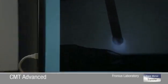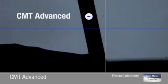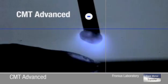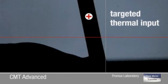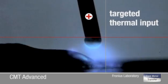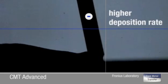In CMT, the wire motions are fully integrated within the process. In addition, CMT Advanced also reverses the polarity in the short-circuiting phase. The arc remains stable and the deposition rate is up to 60% higher.